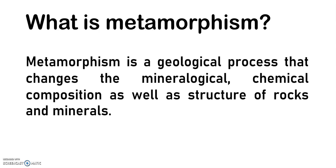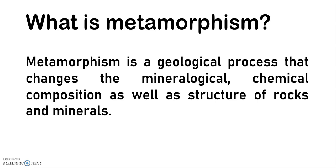First, let's understand what is metamorphism. Metamorphism is a geological process that changes the mineralogical and chemical composition as well as the structure of rocks and minerals. The factors that influence metamorphism are temperature, pressure, and chemical processes. As we go deeper into the Earth, there is an increase in temperature and pressure conditions, and chemically active fluids are responsible for creating chemical processes.